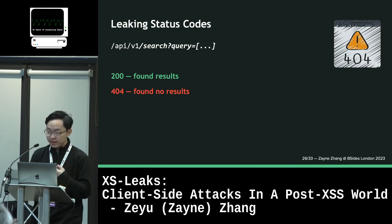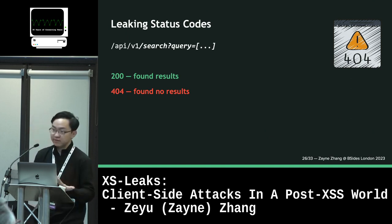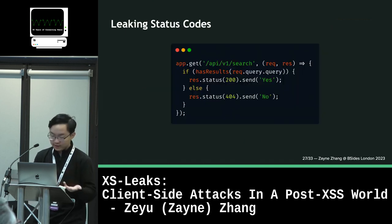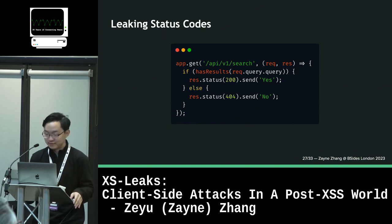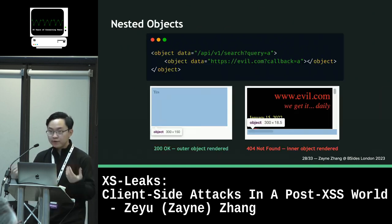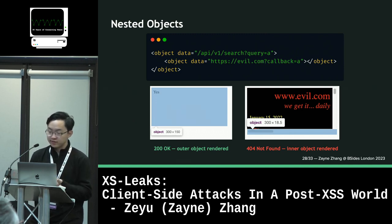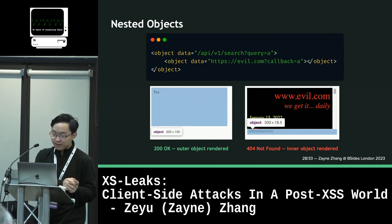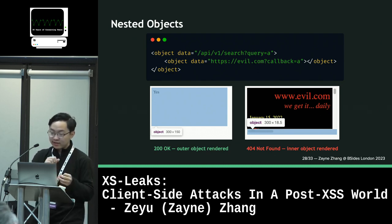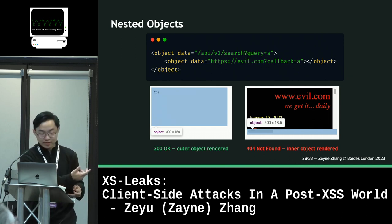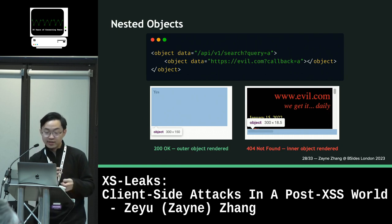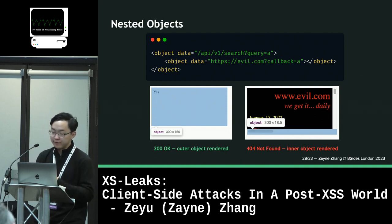Consider a scenario where a leaky API returns different status codes depending on whether a result was found — maybe a 200 if the result was found, and a 404 if not. We could use this idea of nested objects. The difference between an object and an iframe is that when an object URL returns a 404 status code, it is actually not rendered by the browser — even though it exists in the DOM tree, it does not exist in the GUI. Instead, the inner object is rendered. So if you have two nested objects and the outer object returns a 404, the inner object is the one being rendered. If we set our own server URL to the inner object, we can detect whether a 404 was returned by checking if we received a callback.